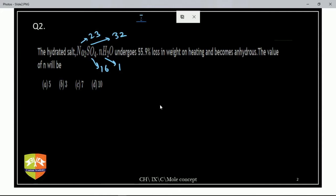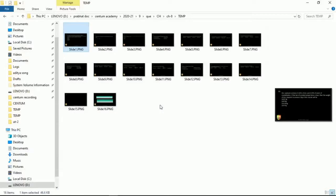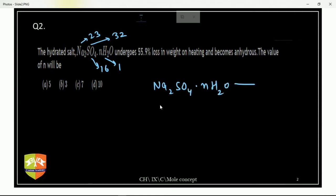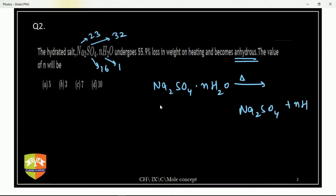Most of you have answered it right. How to do this question: Na2SO4 is given. Anhydrous means all water molecules go outside — Na2SO4·nH2O is hydrated; when you heat it, all water molecules leave, forming Na2SO4 plus n water molecules. You need to calculate the value of n. The percentage loss given is 55.9 percent.